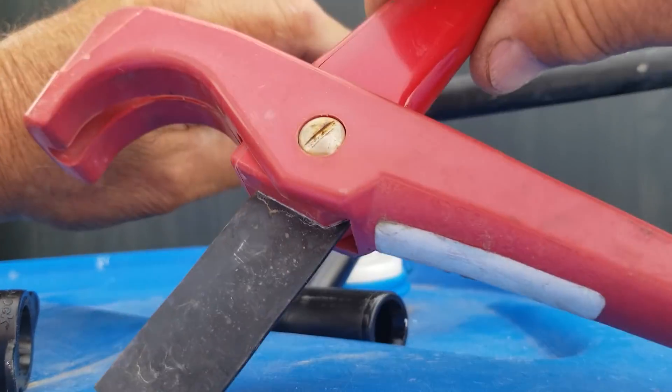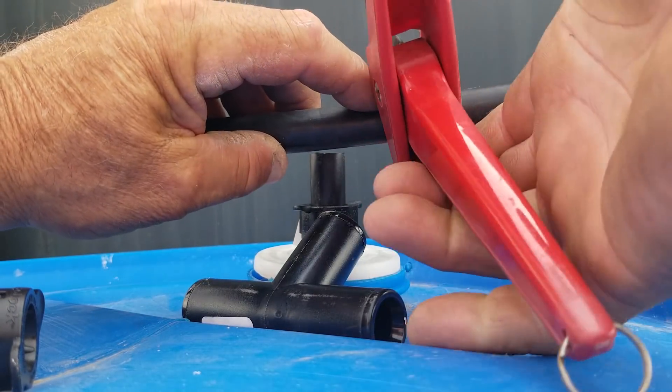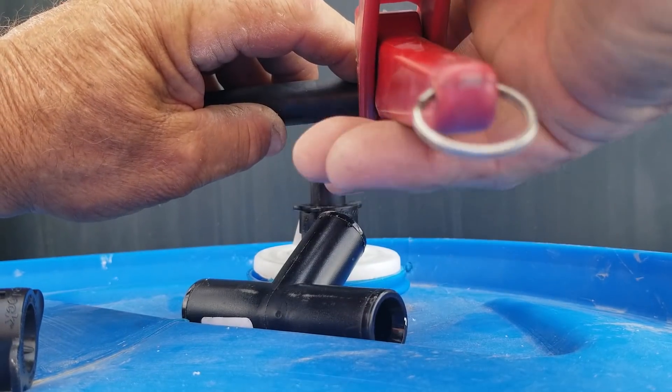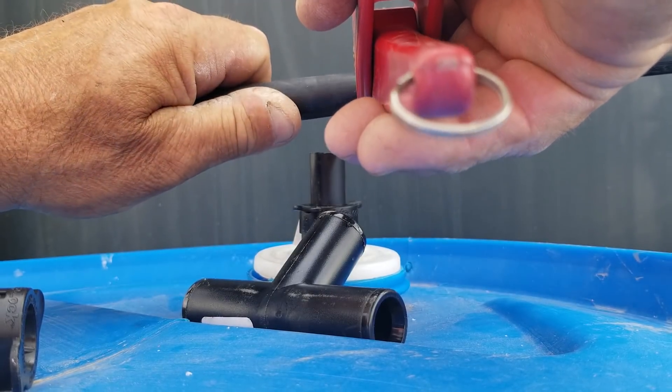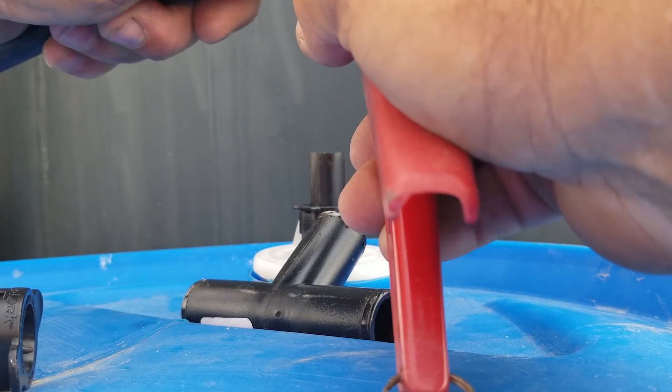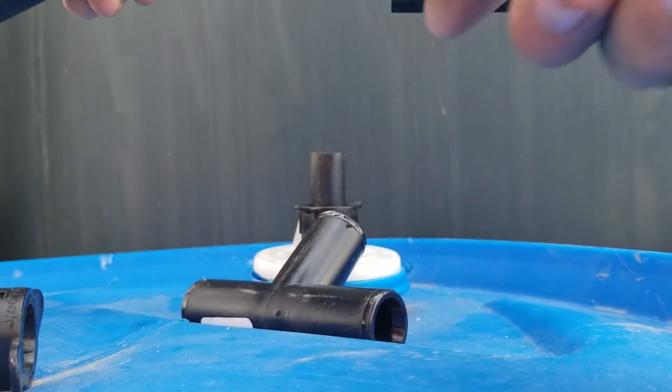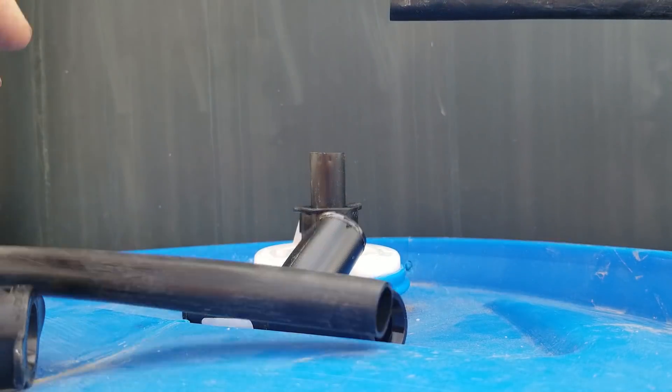And then they have these special cutters for this. And when you're using these cutters, don't try to just squeeze on them. You want to get it set in place and then rotate slightly, and that will start cutting through the pipe. And then you can finish cutting it off.